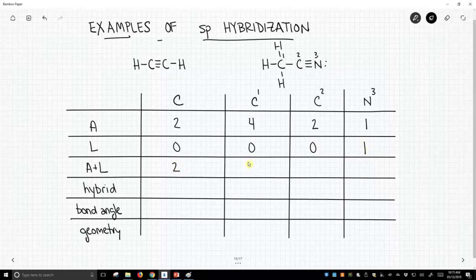A plus L equals 2, 4, 2, 2. What is our hybridization? Well, if we have two attached atoms and lone pairs, that almost always leads to sp hybridization.